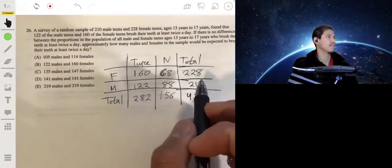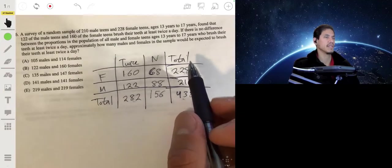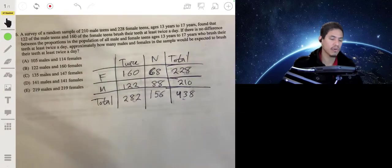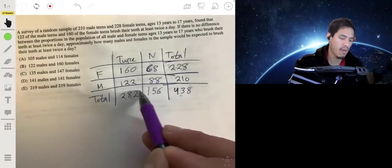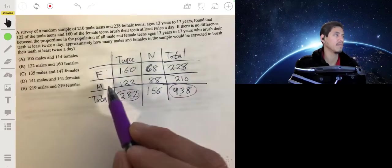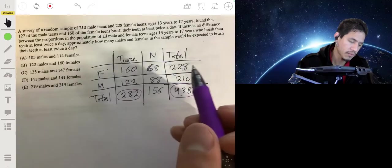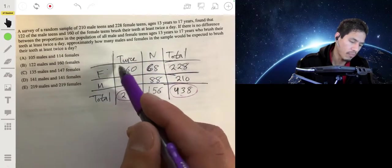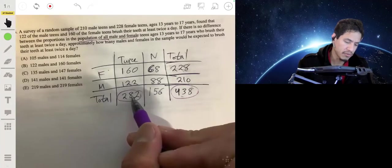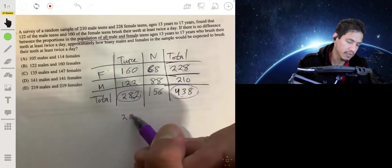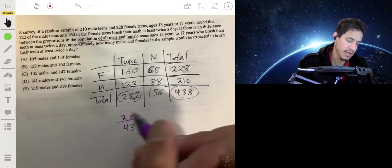If there's no difference in the proportion of female teens and male teens that brush their teeth at least twice a day, that means you can look at the overall proportion that brush their teeth twice a day in this table and apply it to the female and male populations. So we would do 282 divided by 438. That would tell you the total proportion of everyone in the sample that brushed their teeth twice a day.